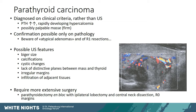Possible sonographic features of carcinoma are bigger size than adenomas, calcifications, cystic changes, lack of distinct planes between the mass and the thyroid, irregular or infiltrative margins, and infiltration of adjacent tissues including the thyroid or muscles. It is important to be aware that even though carcinomas are rare, they exist — I personally saw two in the last year. Parathyroid carcinomas require more extensive surgery: they are not candidates for targeted minimally invasive surgery but should undergo parathyroidectomy en bloc with ipsilateral thyroid lobectomy and central neck dissection aiming for R0 margins. Otherwise there is a very high risk of local residual and recurrent disease.